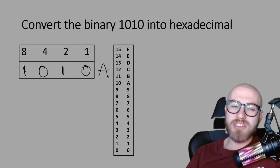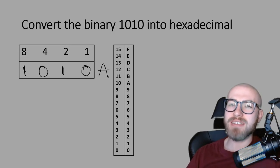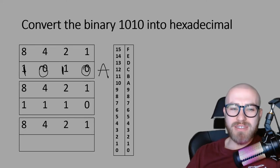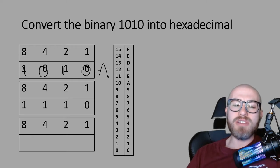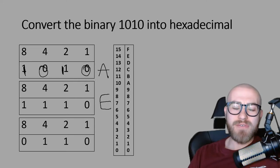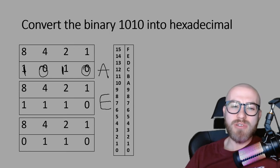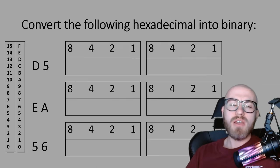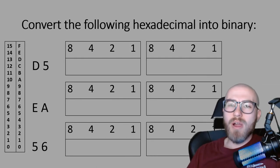That's because looking at the conversion chart, when we get to 10 we don't write 10 — we write A, because that is our hexadecimal base 16 system. Another example: 1110. We do 8 + 4 = 12, + 2 = 14. Looking at the conversion chart, 14 is the equivalent of hexadecimal E. And finally, if we've got 4 and 2, that adds up to 6, which in hexadecimal still looks like 6.